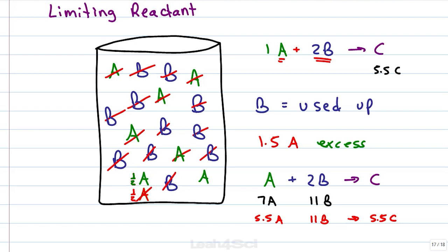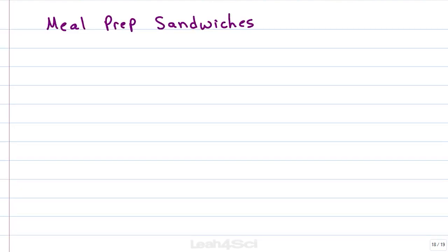To do that, let's use a simple reaction of meal prepping sandwiches because who doesn't love food? In order to meal prep these sandwiches, we need to follow a very specific and exact recipe. And in this recipe, let's keep it healthy, we'll start with 2 slices of bread which we'll call reactant B, 3 slices of turkey which we'll call reactant T and 5 pieces of lettuce which we'll call reactant L.